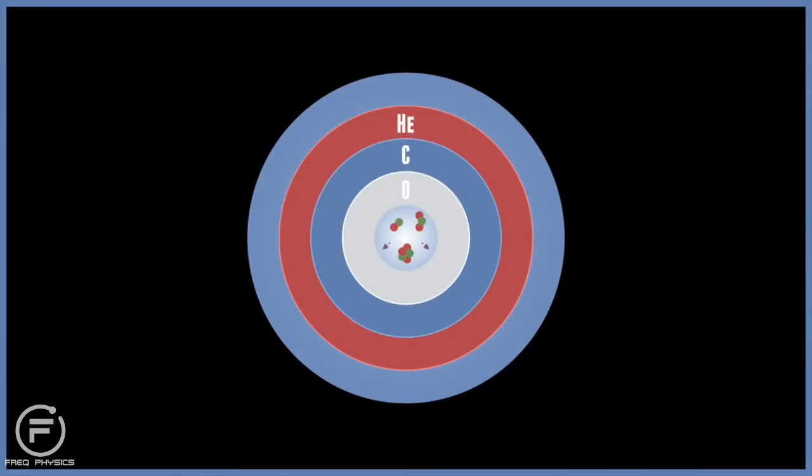Eventually however, the massive star's core becomes composed of simply iron, which sets off the final collapse and the catastrophe.